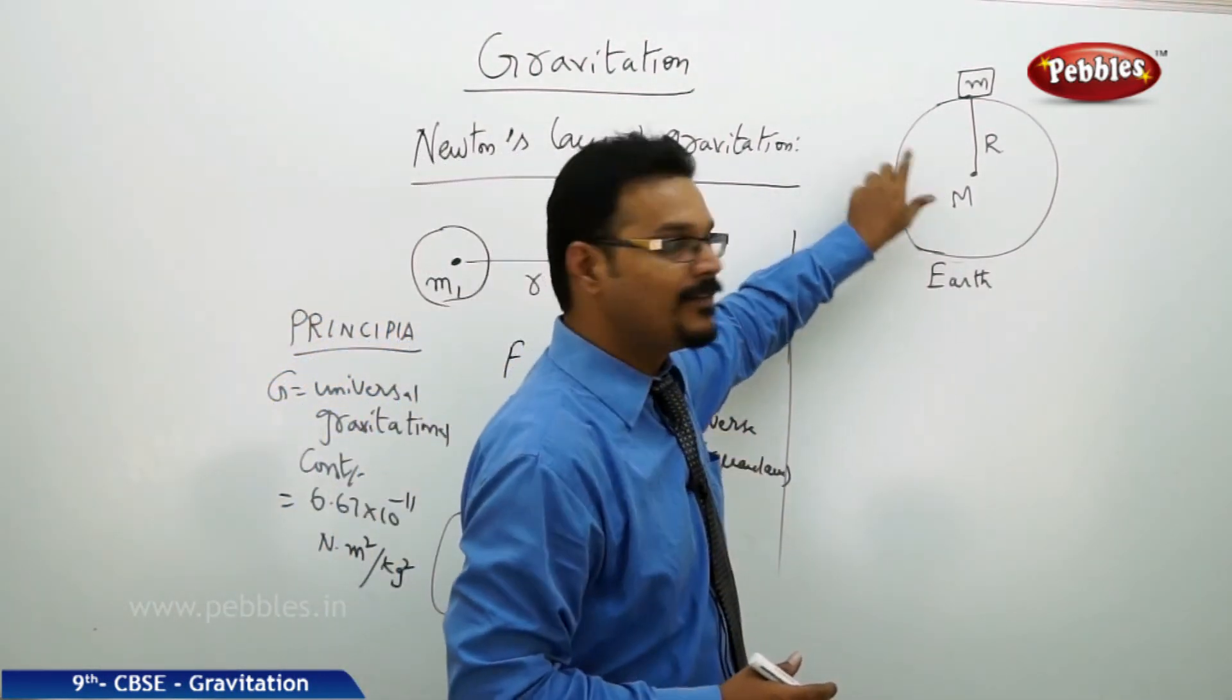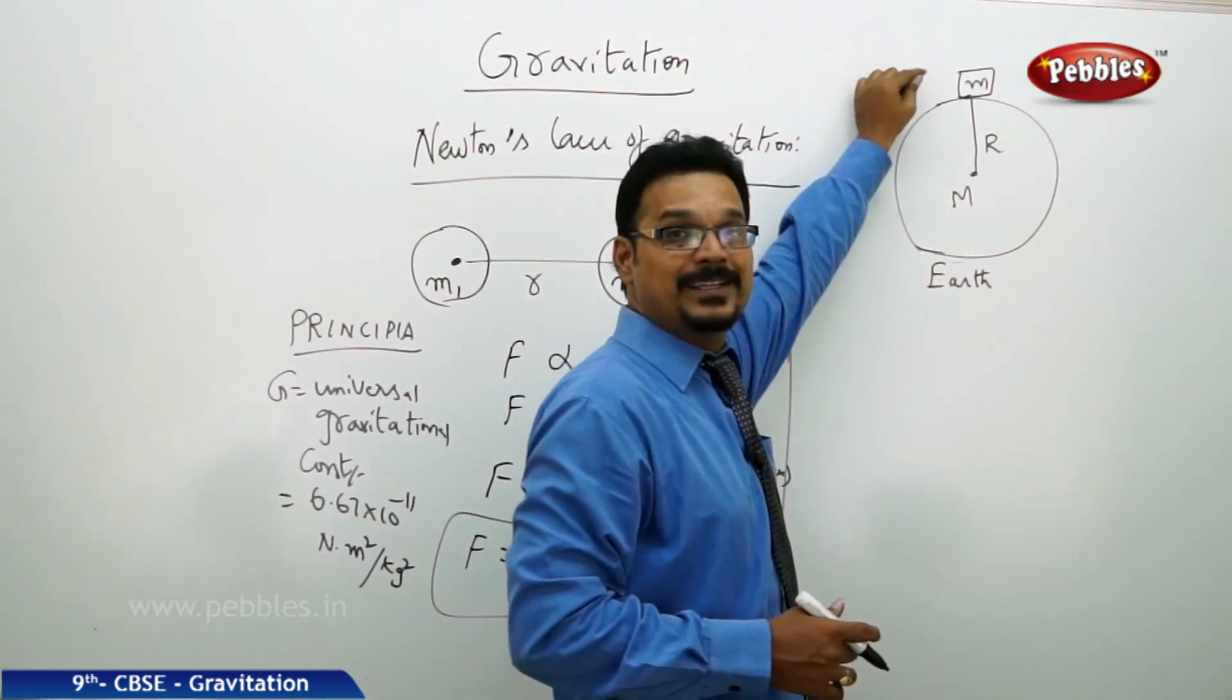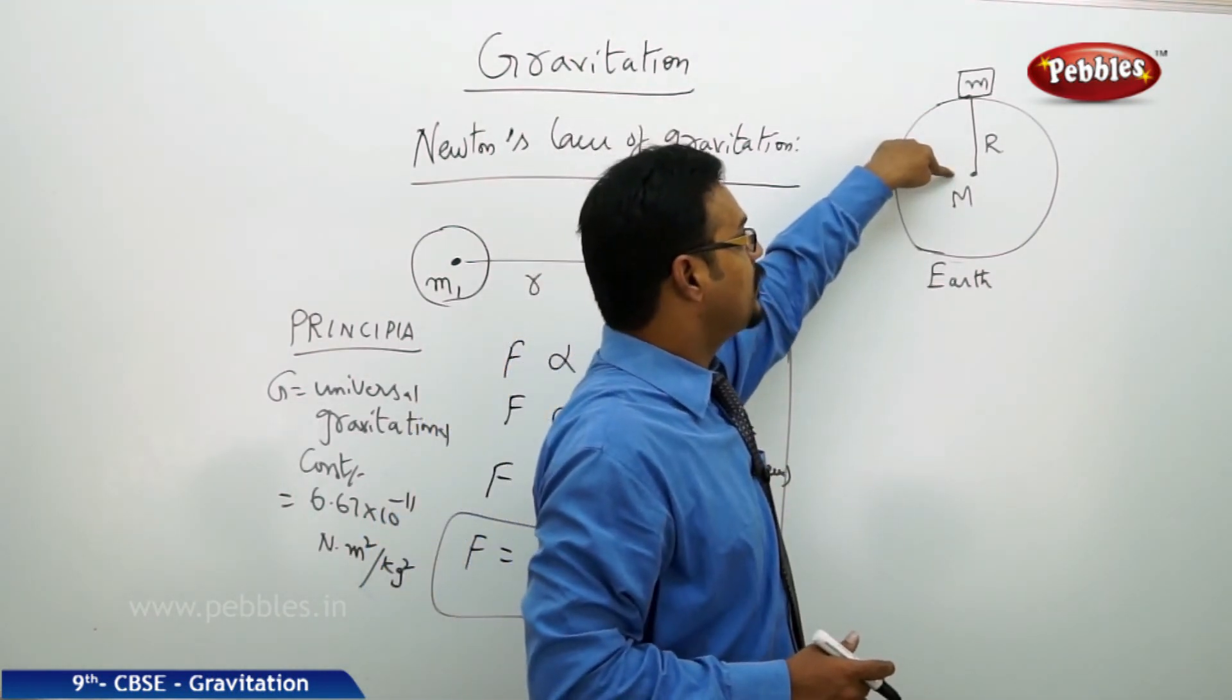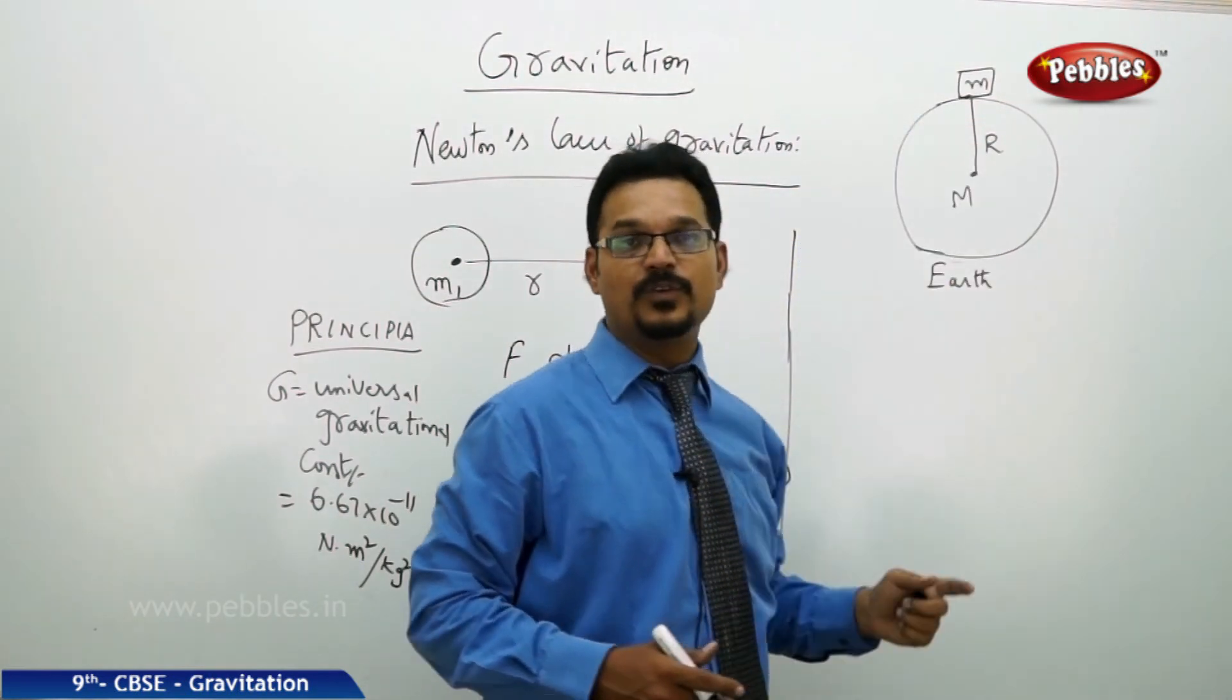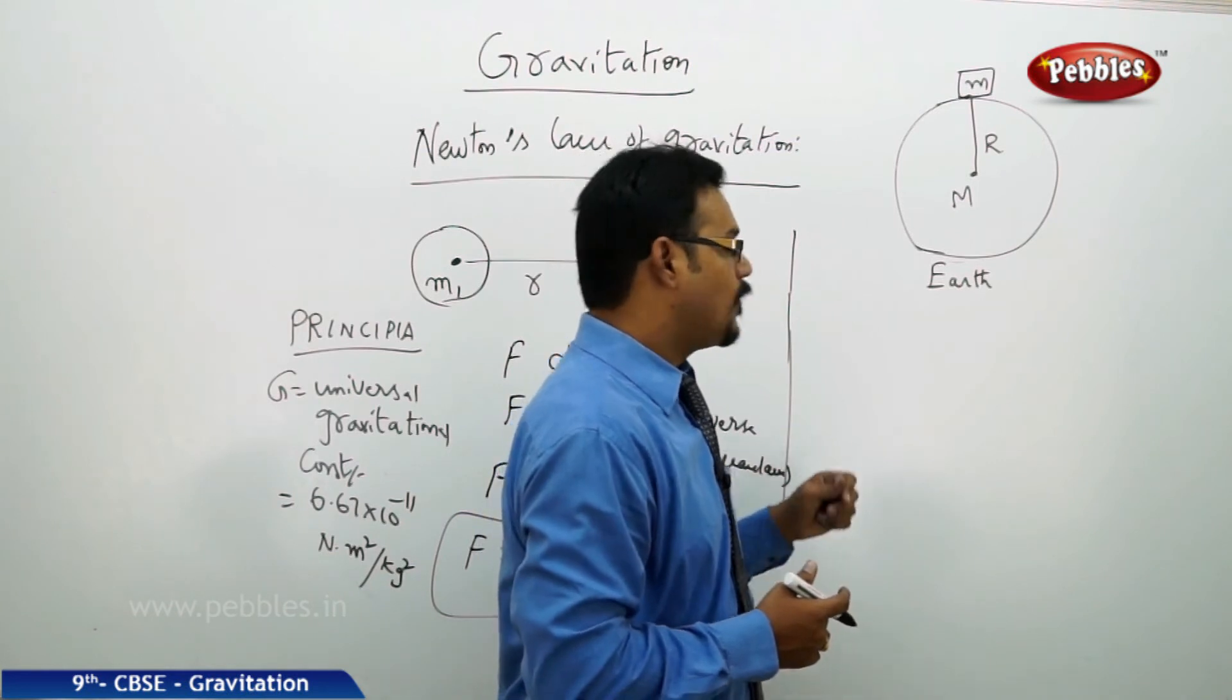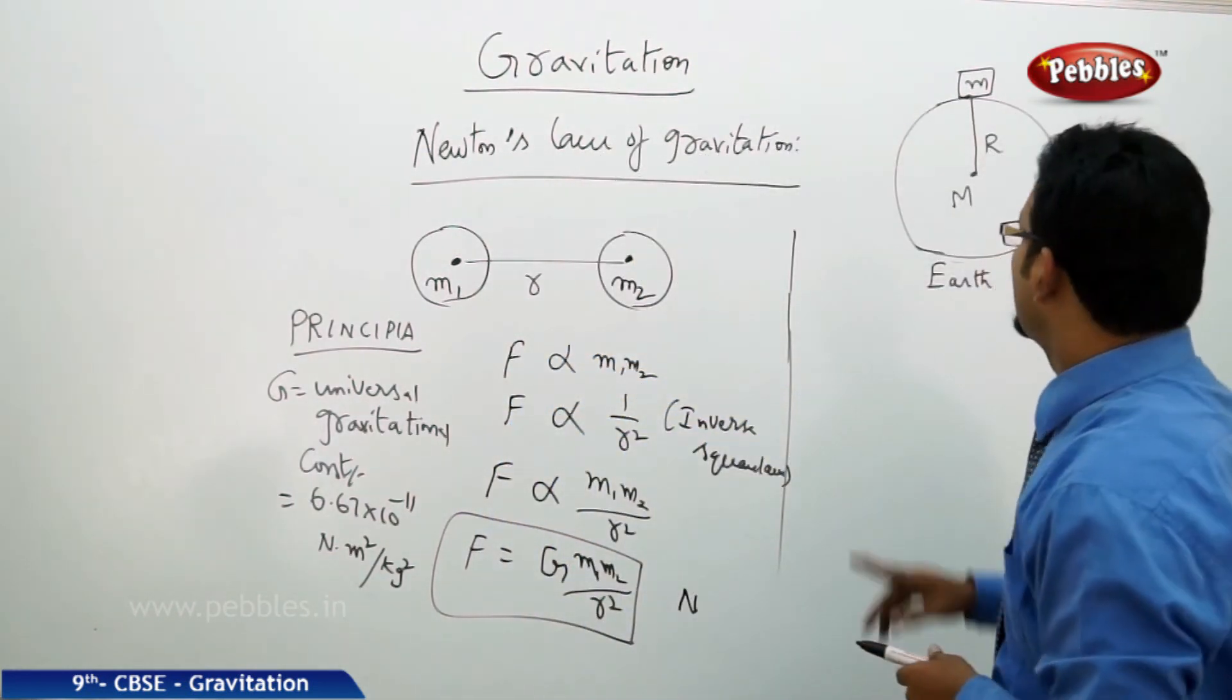If you see this diagram, there's an Earth having mass capital M, there is a body of small mass m on the surface of the Earth, and the distance between the center of the Earth to the mass on the surface of the Earth is capital R, which is the radius of the Earth. Now what is the formula for force of gravitation on the mass m?